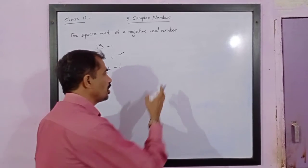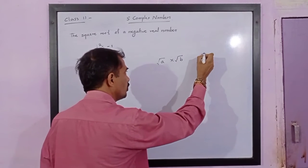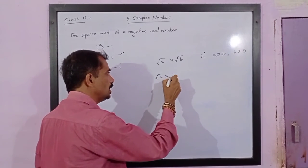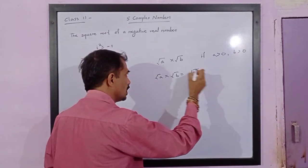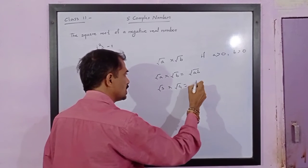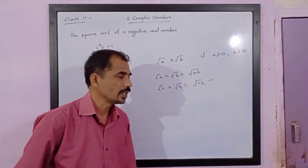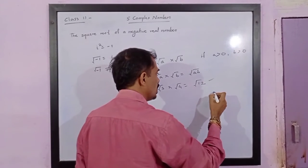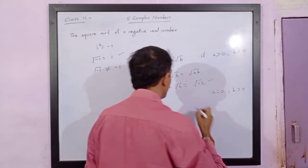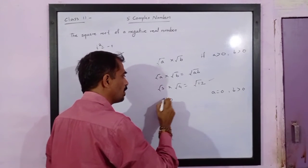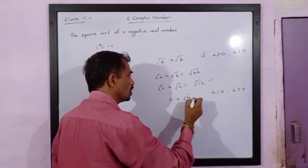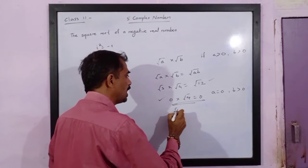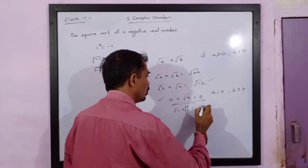Dear friends, we are going to consider the next point: root a multiplied by root b. If a is greater than 0 and b is greater than 0, this is what we have already studied. Root a times root b equals root of ab. For example, root 3 multiplied by root 4 equals root 12. This holds when both numbers are non-negative. If a equals 0 and b is greater than 0, then root a times root b equals root of ab still holds.